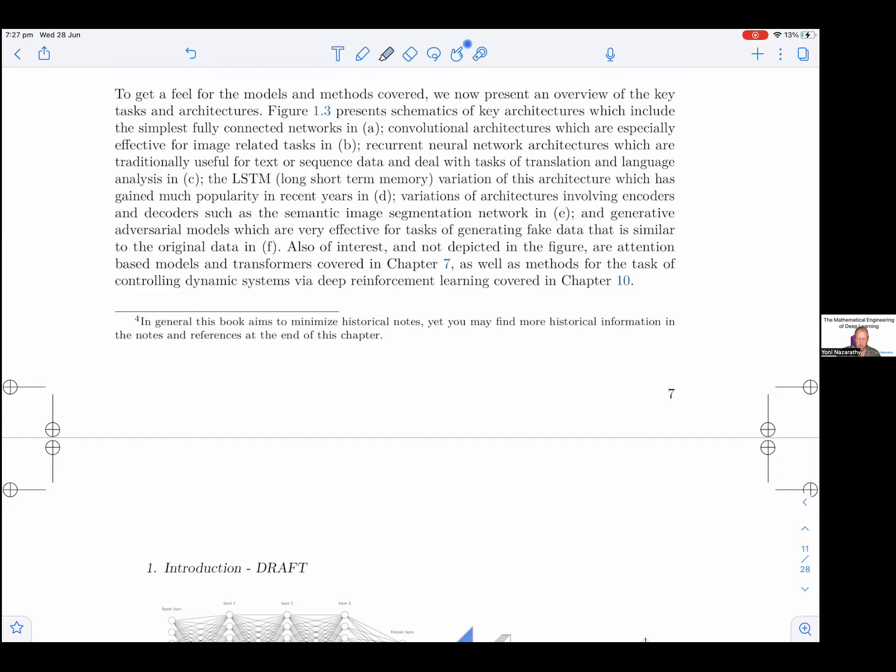Figure 1.3 presents schematics of key architectures, which include the simplest fully connected networks in A, convolutional architectures which are especially effective for image-related tasks in B, recurrent neural network architectures which are traditionally useful for text or sequence data and deal with tasks of translation and language analysis in C.